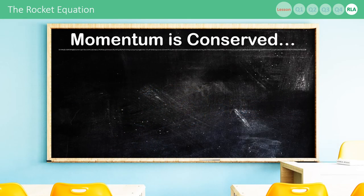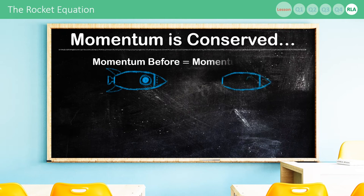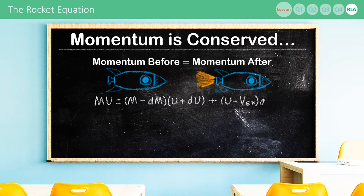We then apply one of the most fundamental principles in physics, conservation of momentum. The momentum before the rocket turns its engine on and releases the propellant must be the same as after. Subbing in both our expressions for momentum, we can then expand the brackets on the right side.